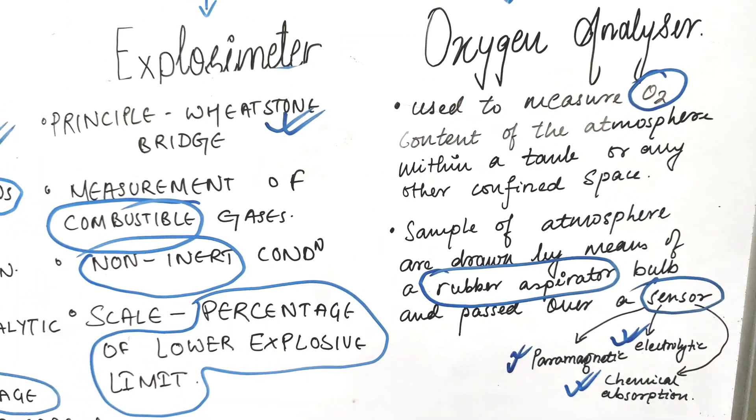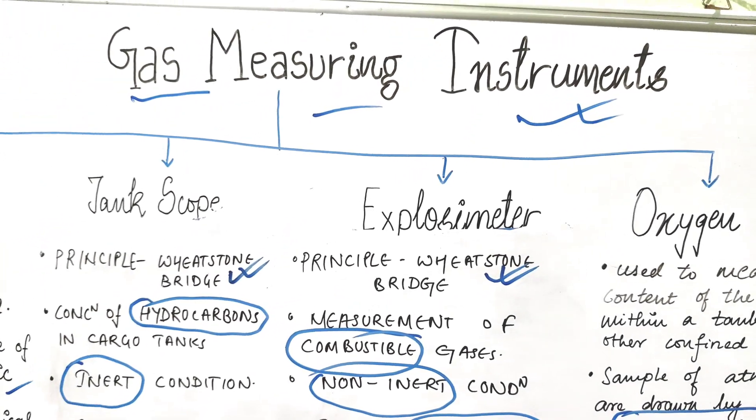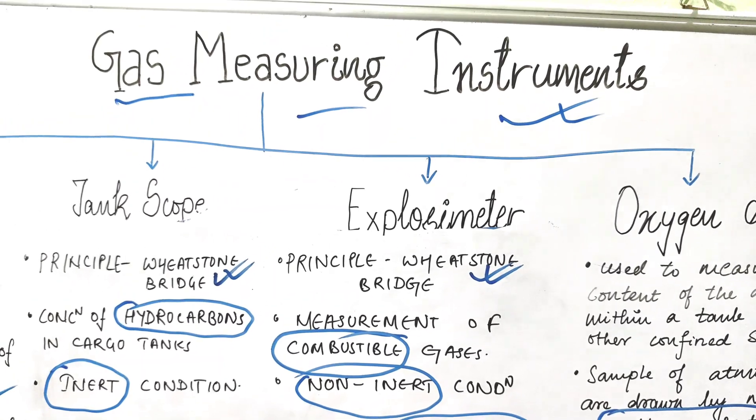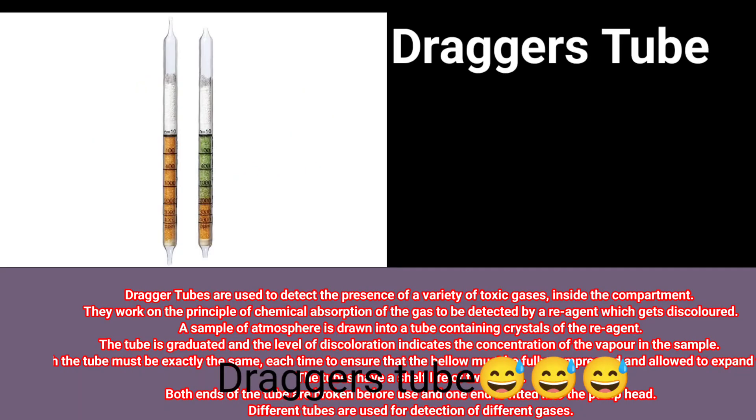These are the various gas measuring instruments, but one is remaining—that is Dregers tube. This is all about Dregers tube. This much is important from this topic. Hope you have liked it. Thank you.